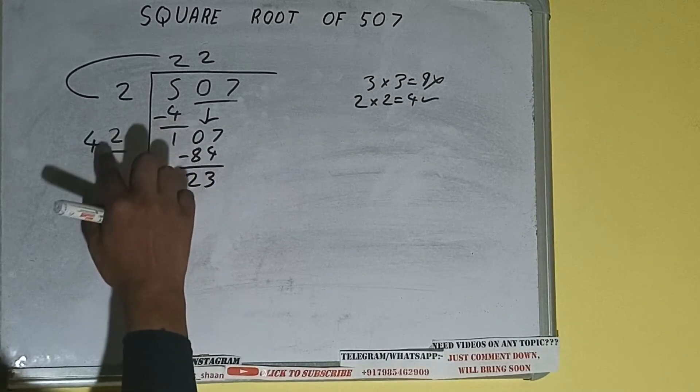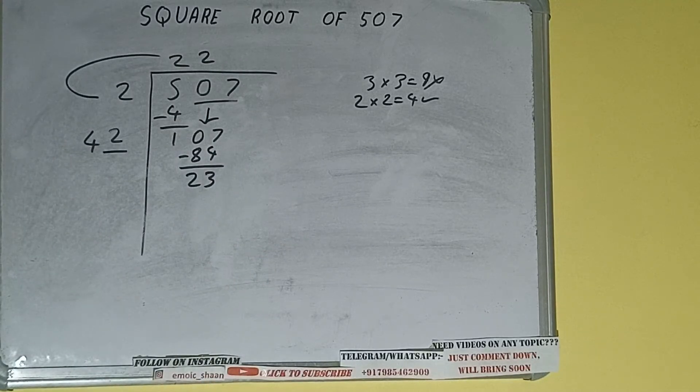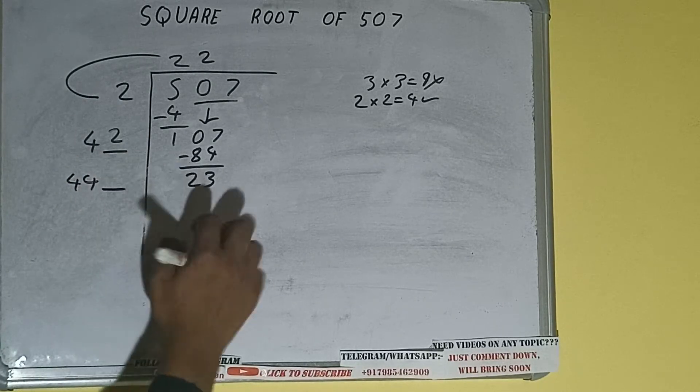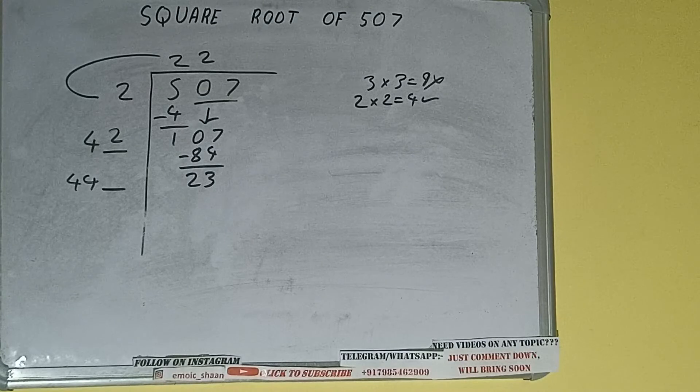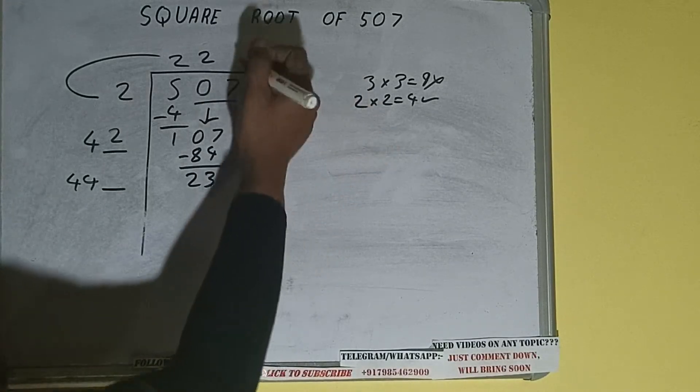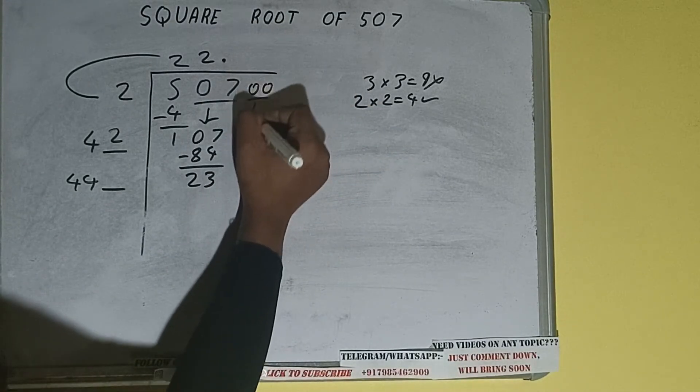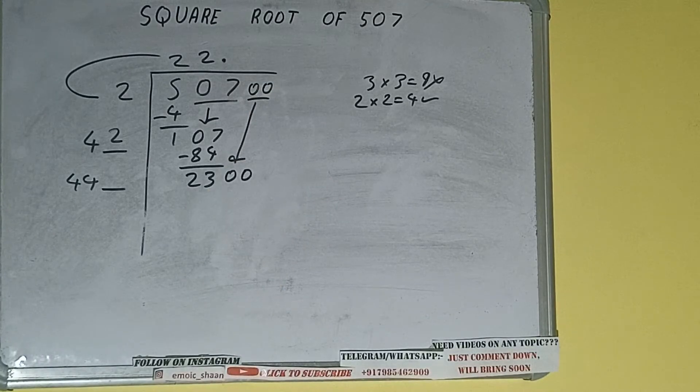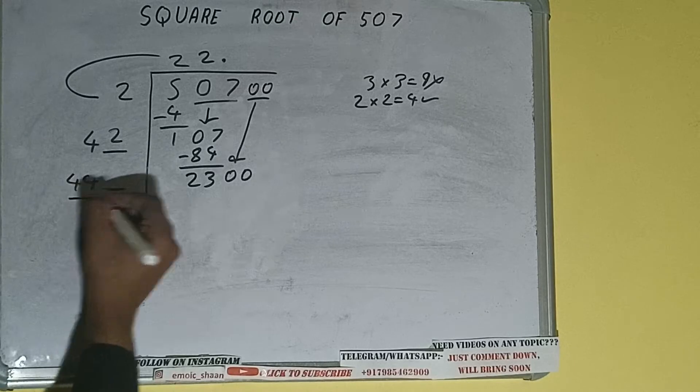Now 42 times 2 we did, so add both. So 42 plus 2 will be 44. Keep a digit extra and this number we need to make it big. But we don't have more pairs, so we'll put decimal. Once we put decimal, we can bring pair of zeros down and it will be 2300.